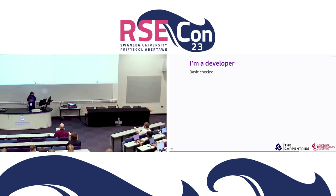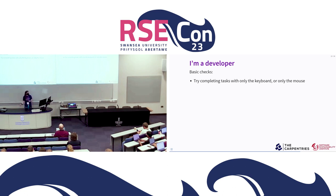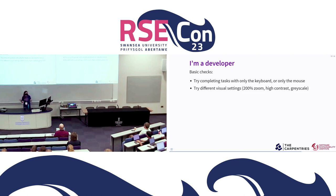Supposing you are a developer on a project, there are some basic checks you can do with just what you have — no need to install any particular software. Try completing tasks, maybe a common workflow in your software, with only the keyboard or only the mouse. If you've got a command line interface, this may be straightforward since they're keyboard-only to begin with. But in web interfaces and GUIs, this can be trickier. Also try different visual settings — try zooming the whole interface to 200% and seeing if things get a bit weird. It's quite common for elements to start overlapping or vanish at high zoom, but this is a really commonly used adaptation.